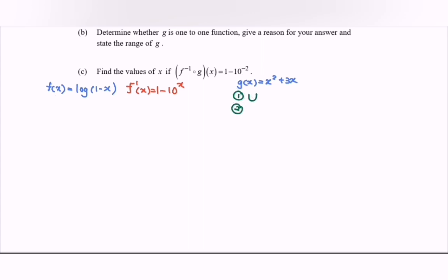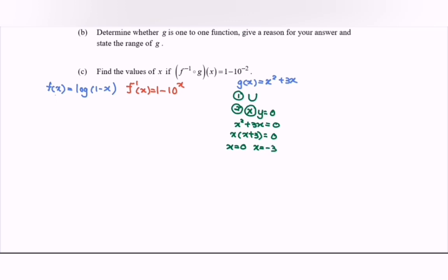Step 2: find the x-intercepts where y equals 0. So we have x squared plus 3x equals 0, giving x(x + 3) = 0. So x equals 0 and x equals negative 3. The coordinates are (0, 0) and (-3, 0).